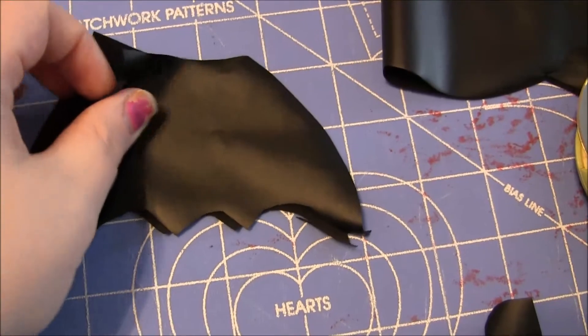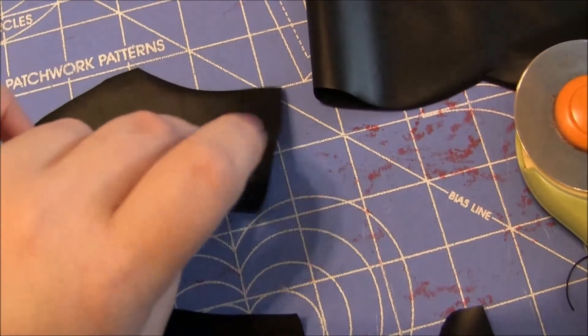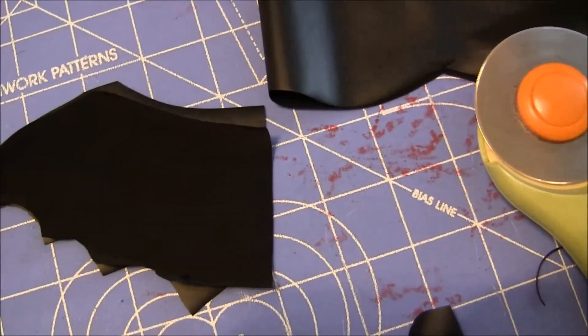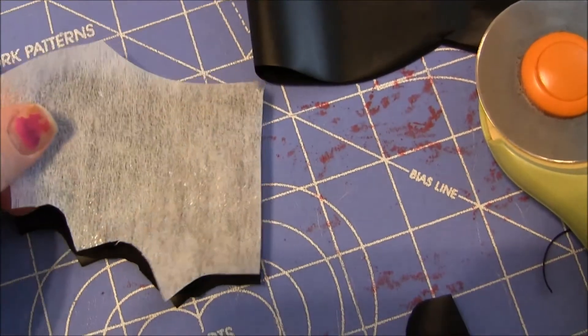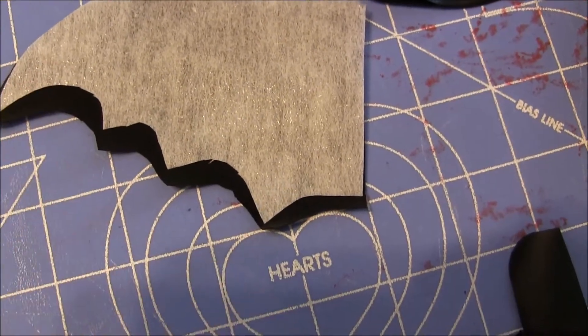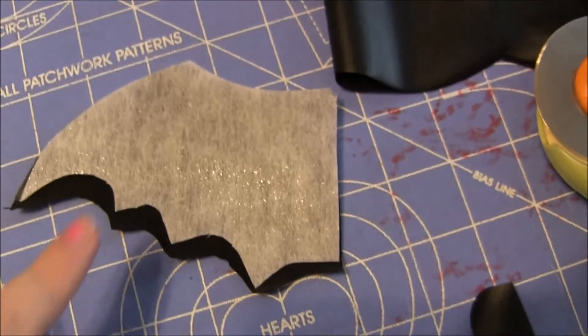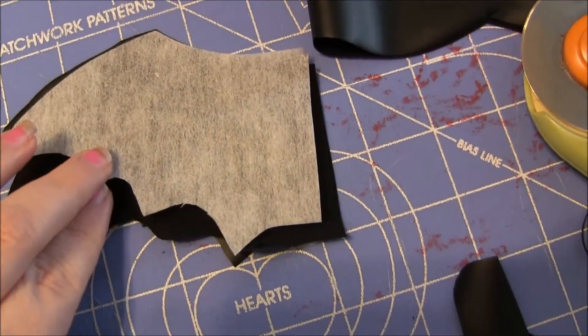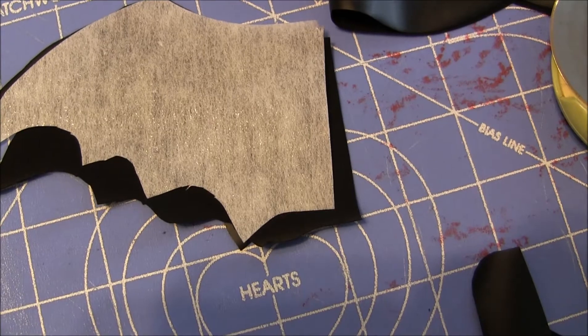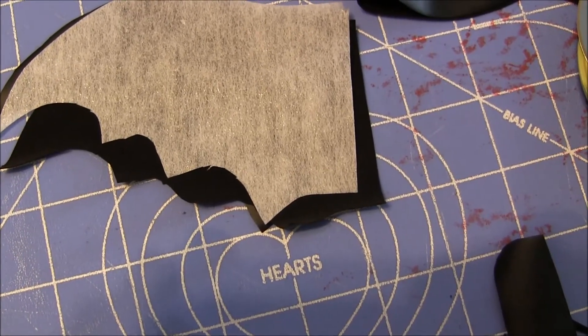You're going to want to pin your fabric pieces together. Take the right sides - this is what would be facing outwards - and put them together. Then take your interfacing piece and put it there. Pin it all together around, and make sure your interfacing is slightly smaller than the fabric. When you flip it right side out after you're done sewing it, that will be facing the inside.